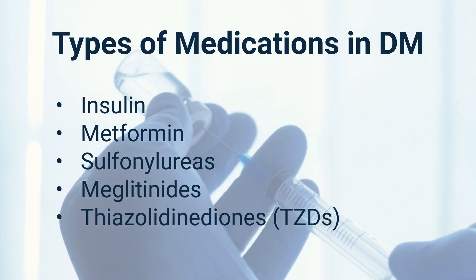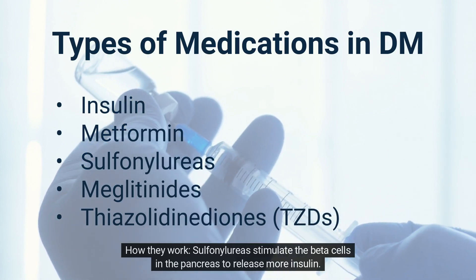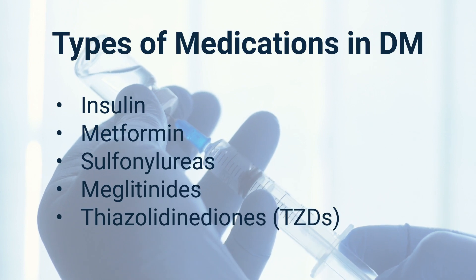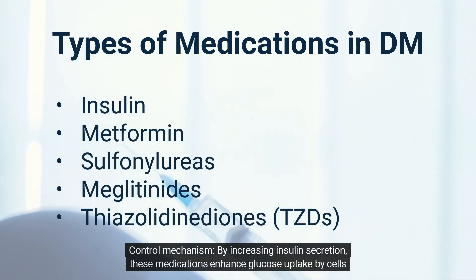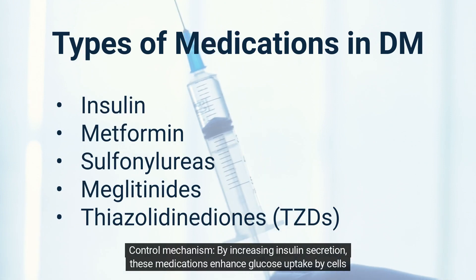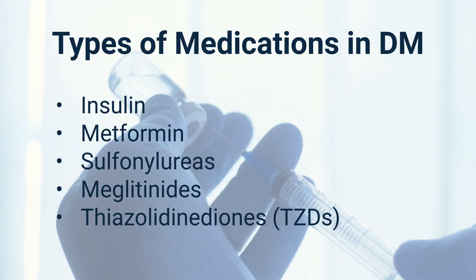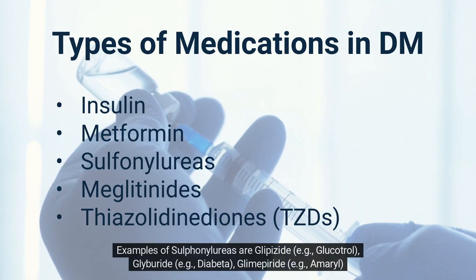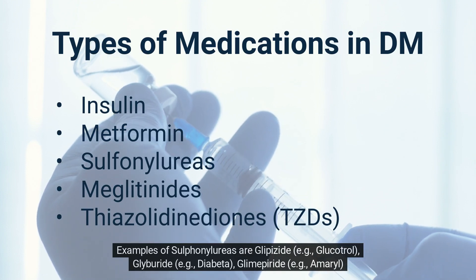Sulfonylureas stimulate the beta cells in the pancreas to release more insulin. By increasing insulin secretion, these medications enhance glucose uptake by cells and reduce blood glucose levels. Examples of sulfonylureas are glipizide (Glucotrol), glyburide (Diabeta), and glimepiride (Amaryl).